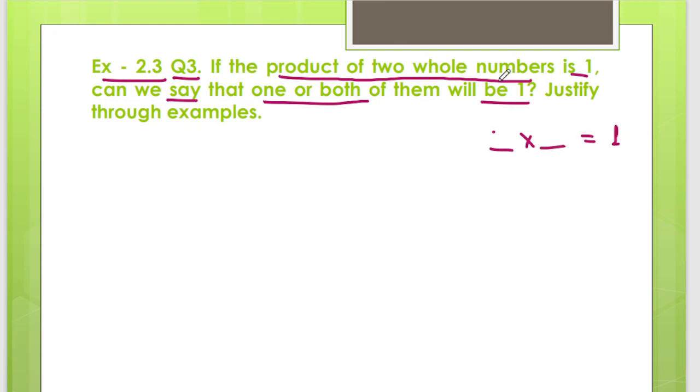If one whole number is 1 and another whole number is, let's say 0, then 1 into 0 is not equal to 1. Can we say that 1 of them will be 1? No, we cannot. Because if we multiply 2 whole numbers and only one number is 1, the answer is not 1.